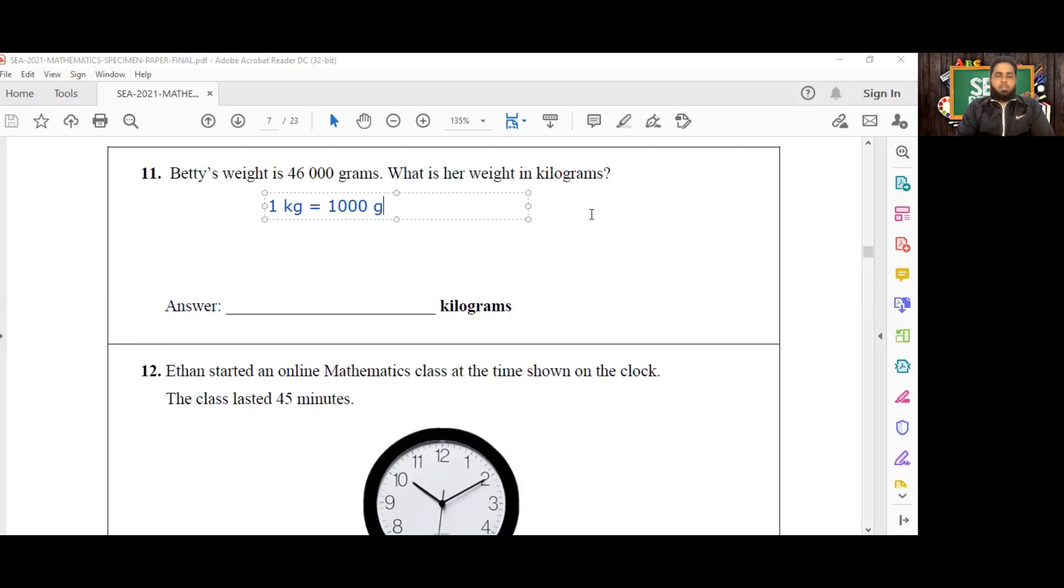And knowing this, we have to now simply divide 46,000 by 1,000, and that will give us our answer. So we have 46,000 divided by 1,000, and that is going to leave me with 46 kilograms.